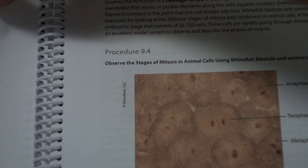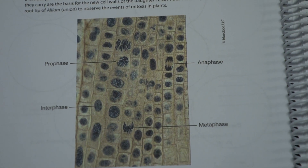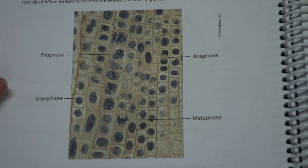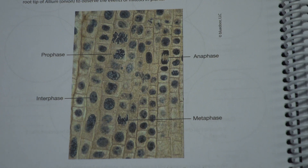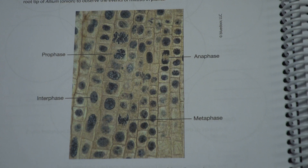In class, you would be counting all of these cells, sharing with your group, adding the whole class's counts together, and then figuring out approximately how long it takes to go through mitosis. One generalization we make is that in most eukaryotes, the cell cycle including mitosis takes about 24 hours. So if the cell is going to reproduce, it takes about 24 hours to do that.